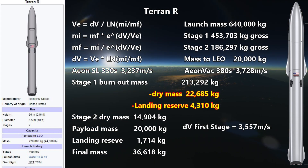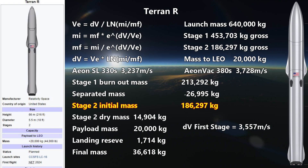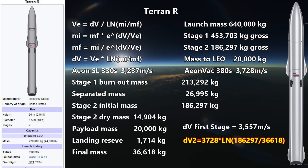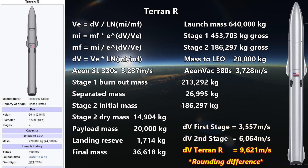Now the mass of the first stage with its reserve propellant falls away to go back and land. The total mass of our second stage is 186,297 kilograms, and our final mass must be at least 36,618 kilograms. Using our vacuum exhaust velocity of 3,728 meters per second, we get a delta V of 6,064 meters per second. Adding that to the first stage contribution, we get a total of 9,622 meters per second. If 9,400 is enough, we're fine.